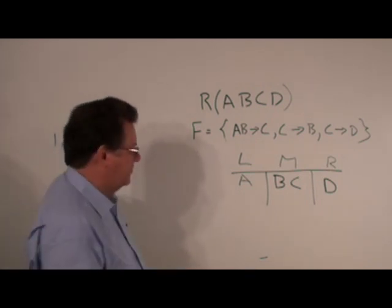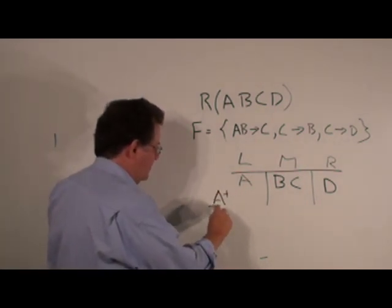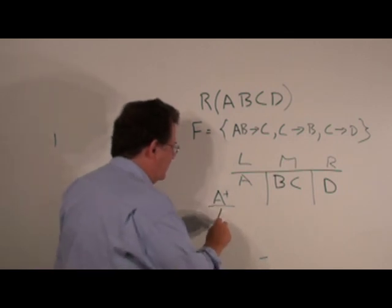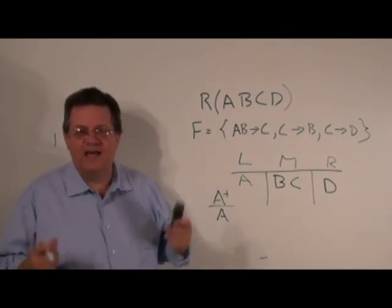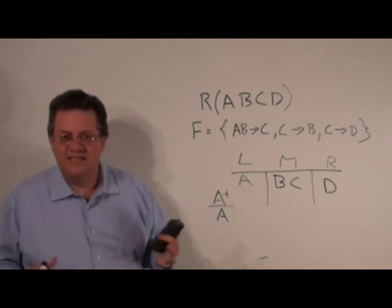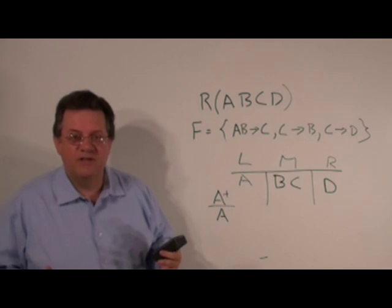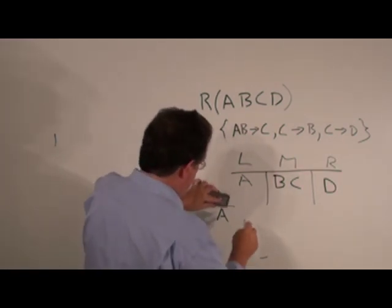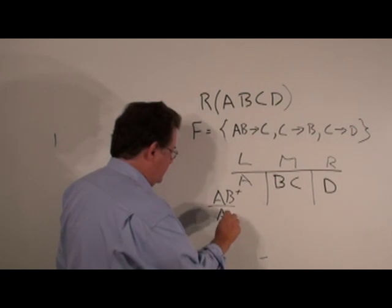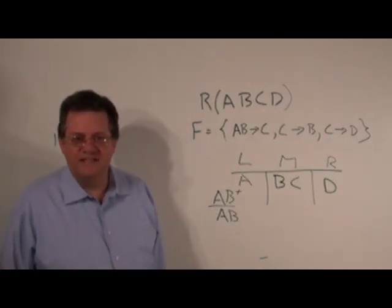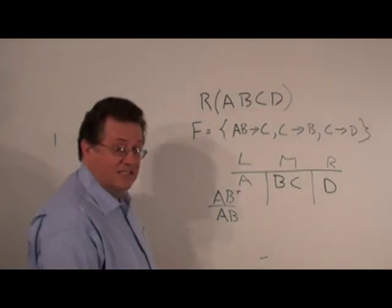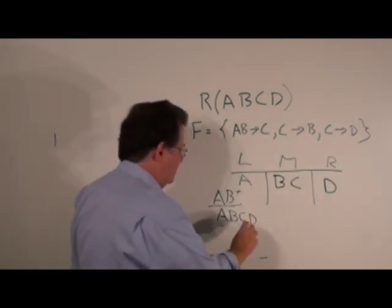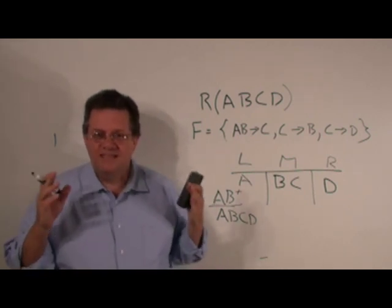So it looks like A might be part of a key. Let's try the closure of A. By reflexivity we have just A — A alone does not determine all attributes, so A by itself is not the key. Now we have to try adding a middle attribute. Let's try the closure of AB. By reflexivity we get A, B. AB determines C, then C determines D. So AB closure is A, B, C, D — AB is a key.